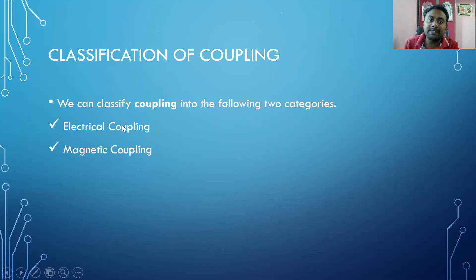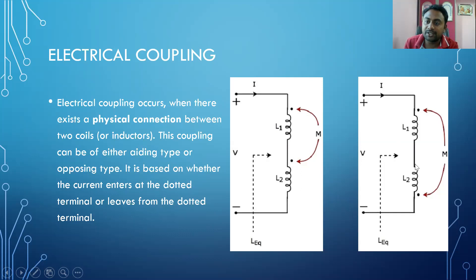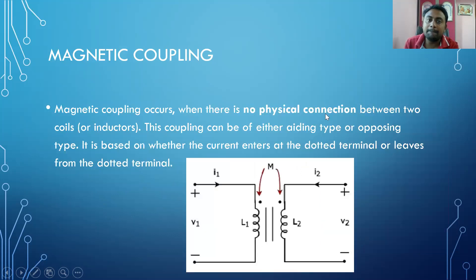Now I am classifying the coupling — the main purpose for which we use the dot convention in coupled circuits. The coupling is either electrical coupling or magnetic coupling. Electrical coupling, as the term itself says, means there must be a physical connection between the two coils. This is classified into two types: series aiding — where both currents enter the dotted terminals — and series opposing — where one current enters and the other leaves the dotted terminal.